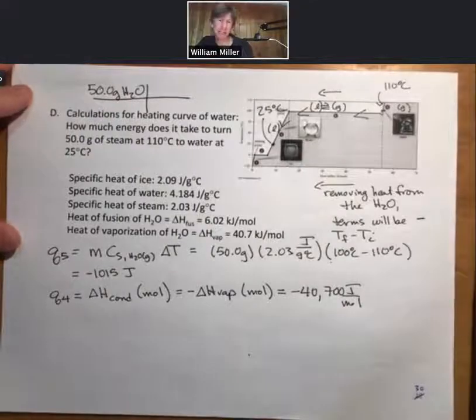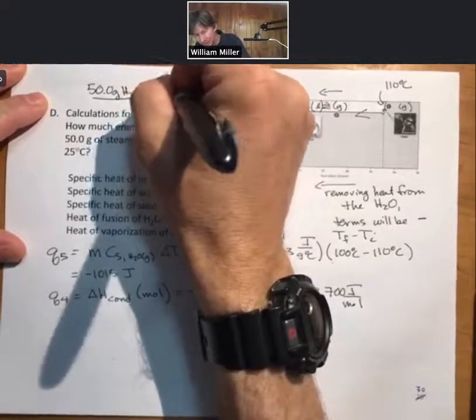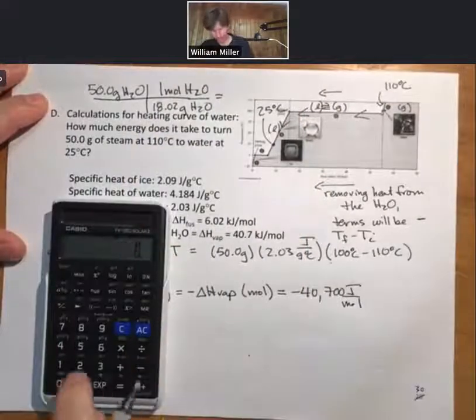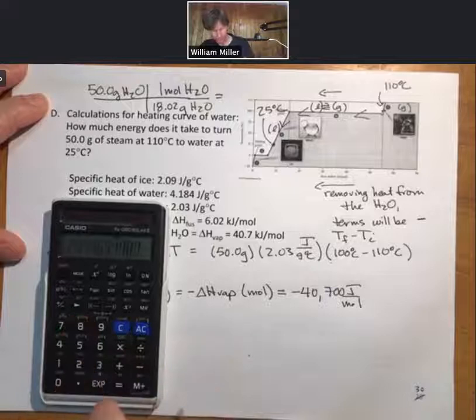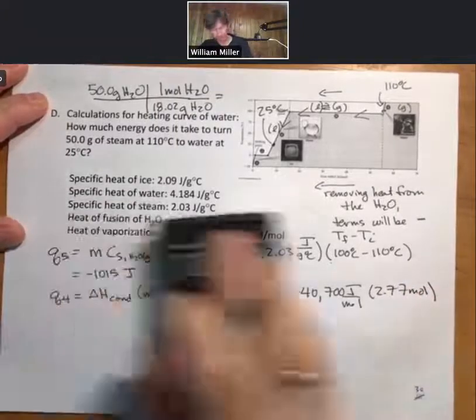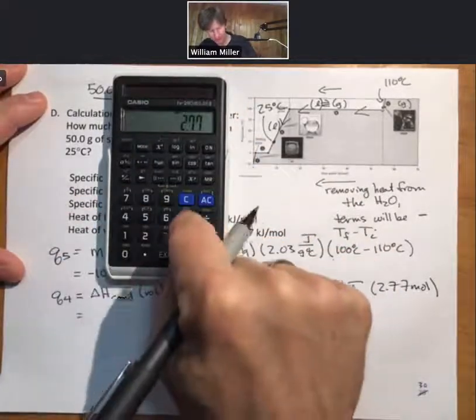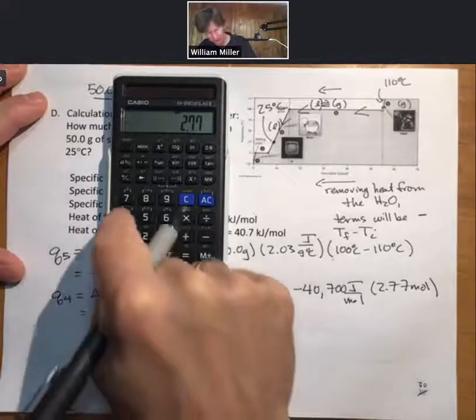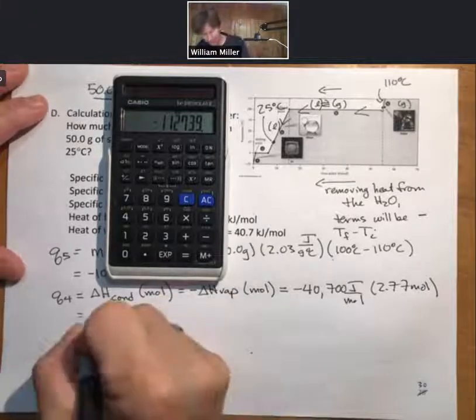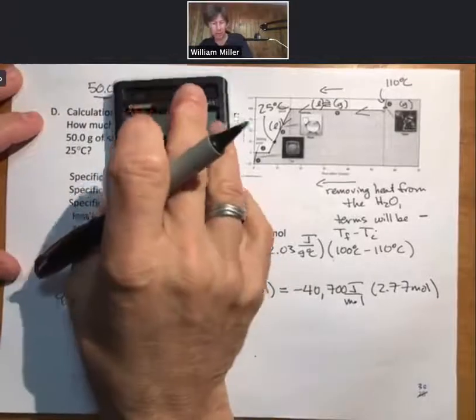And I use my molar mass to get my moles: 18.02 grams of H2O per mole. I get 2.77 moles. Multiplying that out, so 2.77 times 40,700 negative, and I get minus 112,739 joules.